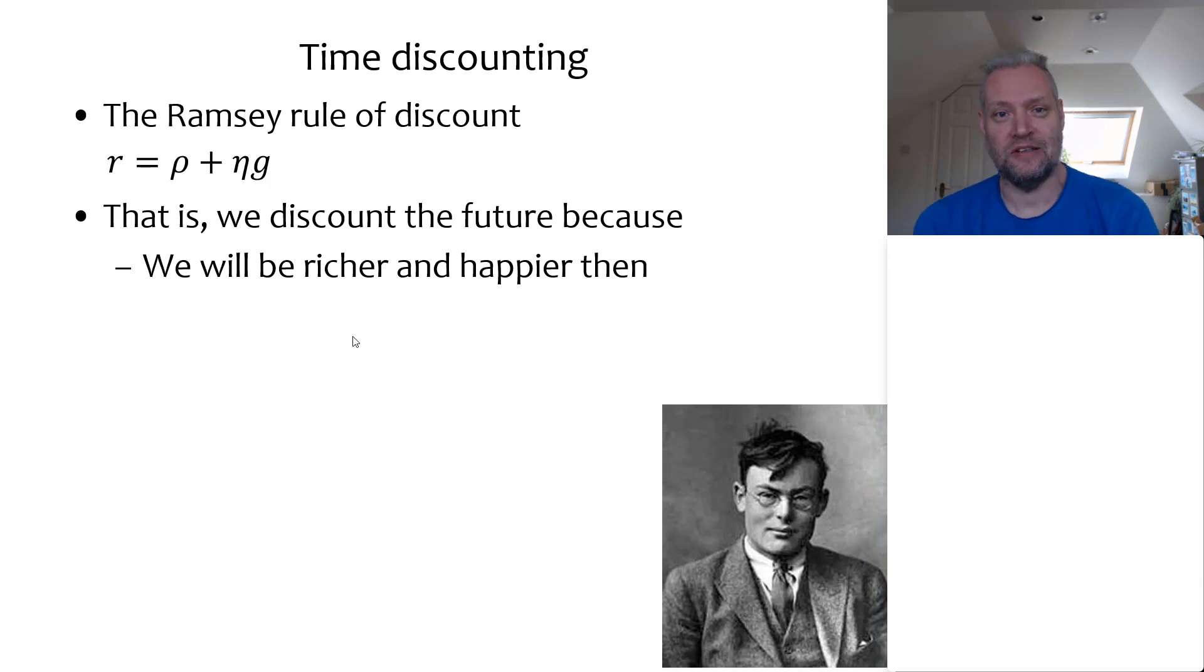Discounting over time is typically done according to the so-called Ramsey rule, named after Frank Ramsey, who you see here. Frank was a brilliant economist or had a really bright future. He was a professor of economics at a young age at Cambridge, wrote a couple of fantastic papers, and then he committed suicide. So we never know what would have been the fate of economics had he chosen to live longer.